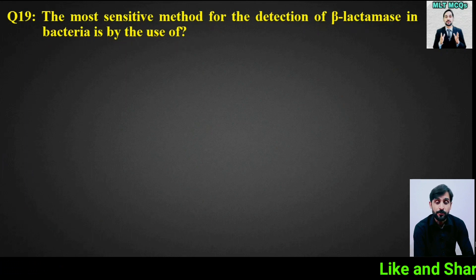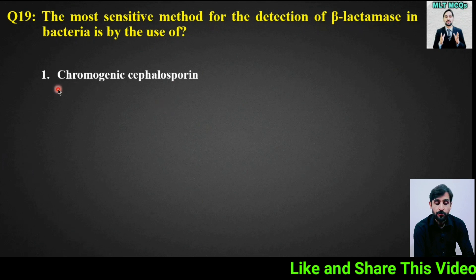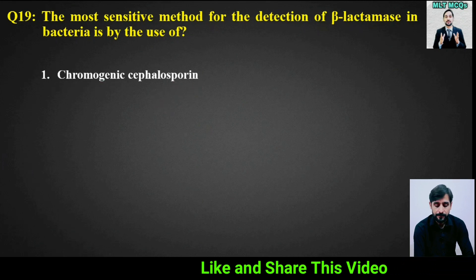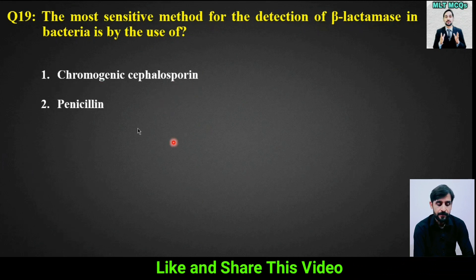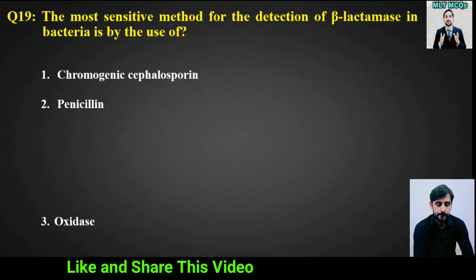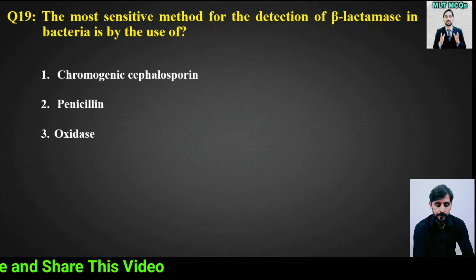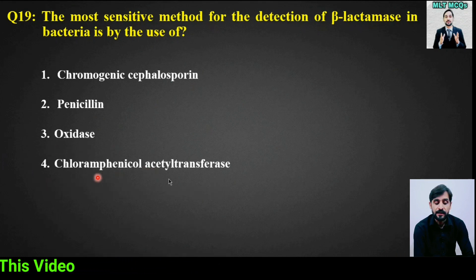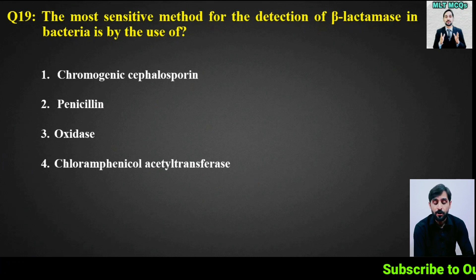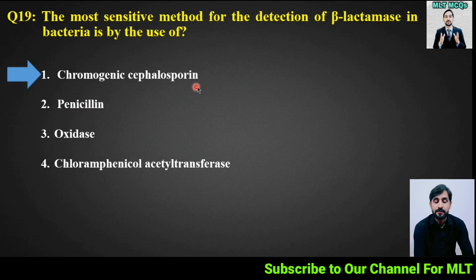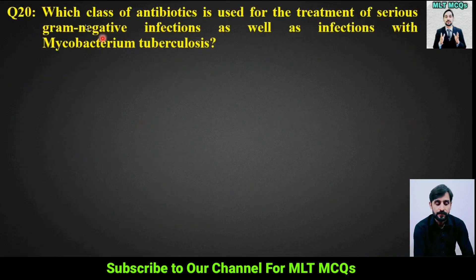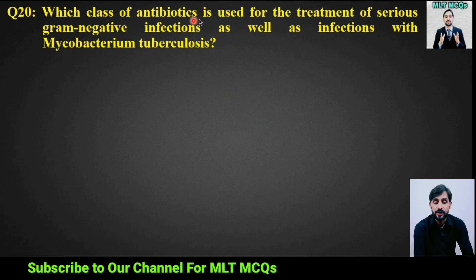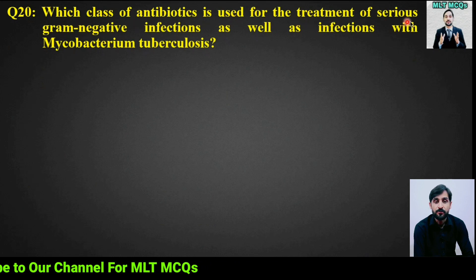MCQ number 19: The most sensitive method for the detection of beta-lactamase in bacteria is by the use of — options: chromogenic cephalosporin, penicillin oxidase, or chloramphenicol acetyltransferase. The right answer is option 1: chromogenic cephalosporin.